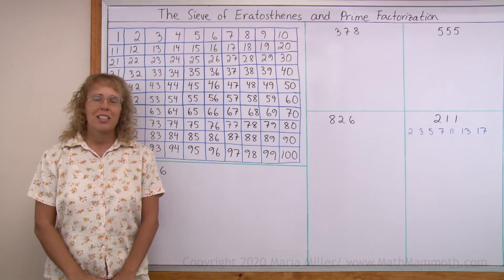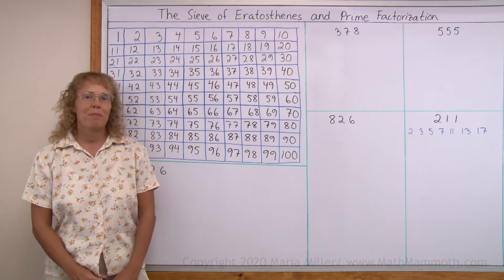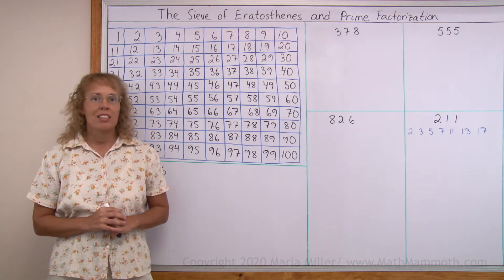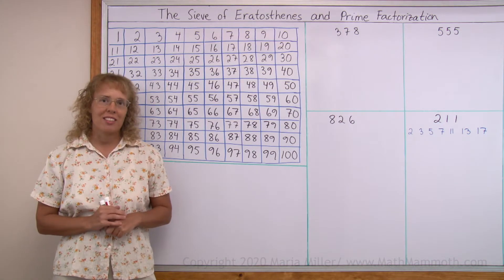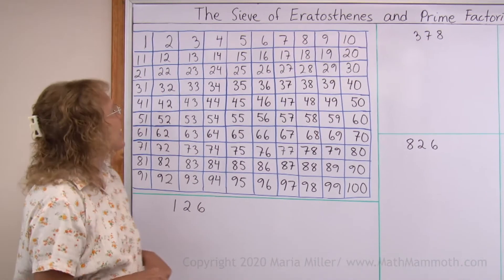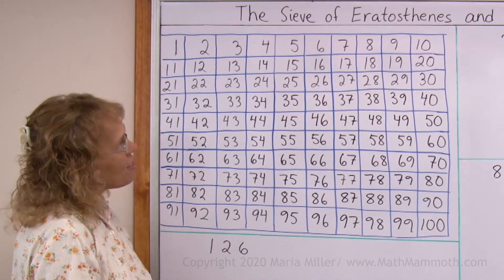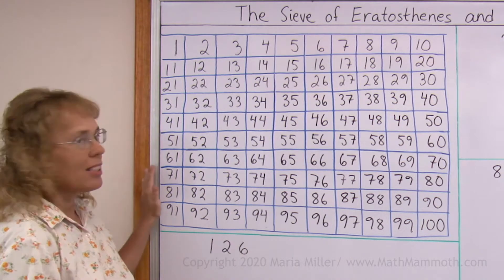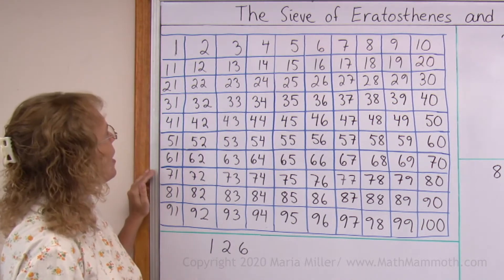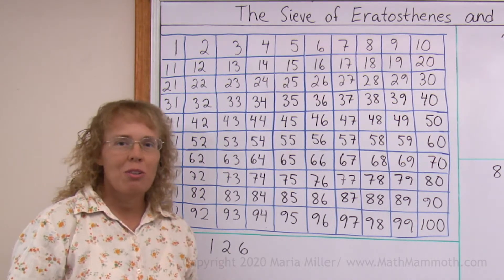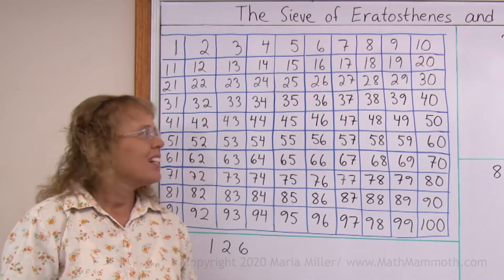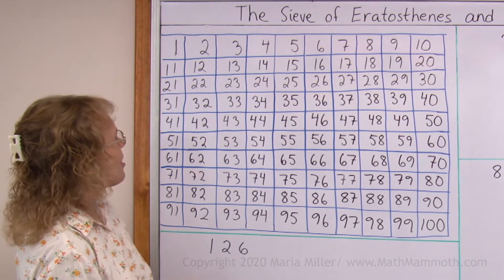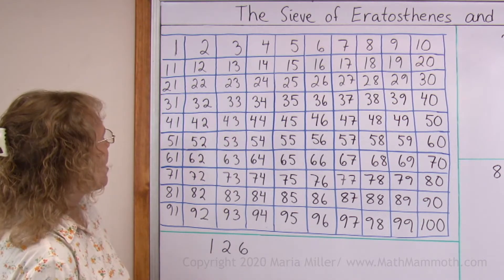Hello, my name is Maria from MathMammoth.com. In this lesson we are studying the sieve of Eratosthenes and prime factorization. The sieve of Eratosthenes is basically where we write a number chart — this time it is a hundred chart — and we're going to cross out all the numbers that are not primes. What we have left is prime numbers. The crossing out, or the sieving, is done in this manner.